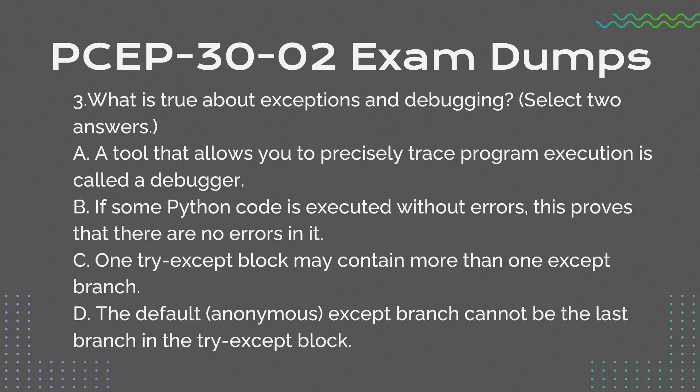Question 3: What is true about exceptions and debugging? Select two answers. a. A tool that allows you to precisely trace program execution is called a debugger. b. If some Python code is executed without errors, this proves that there are no errors in it. c. One try-except block may contain more than one except branch. d. The default, anonymous, except branch cannot be the last branch in the try-except block.